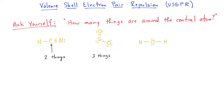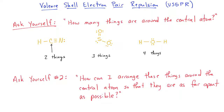In the case of water, we see that there are two atoms — two hydrogens — and two lone pairs. That counts as four things around the central atom. The next question you should ask yourself is: how can I arrange these things around the central atom so that they are as far apart as possible from each other?